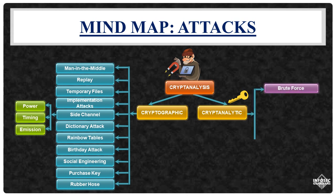A brute force attack represents the most straightforward hacking method, trying every possible key until the correct one is found. Although simple, it proves entirely ineffective against encryption algorithms employing longer keys. It's crucial to consider the key space — the total number of potential keys — which doubles with each additional bit in the key length. Consequently, the key space increases exponentially, presenting a formidable challenge. For algorithms relying on 128-bit or especially 256-bit keys, there's currently no known system or technology capable of brute-forcing keys of that length.